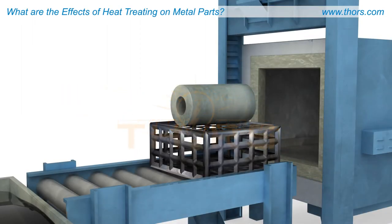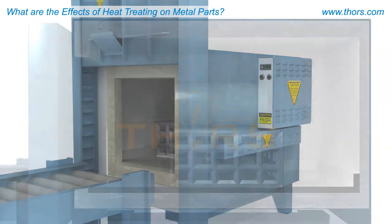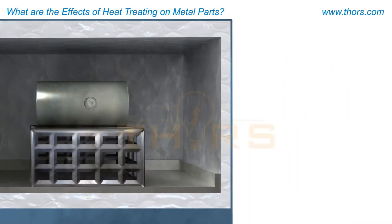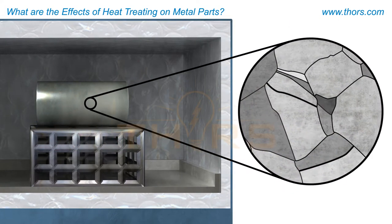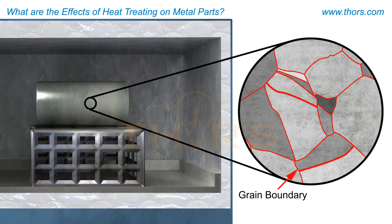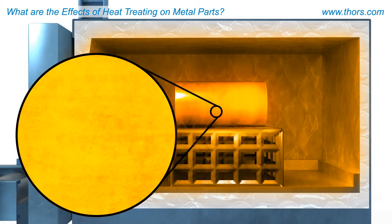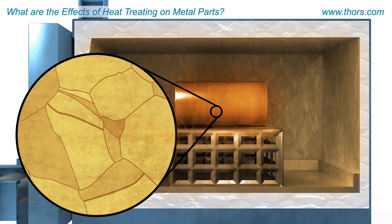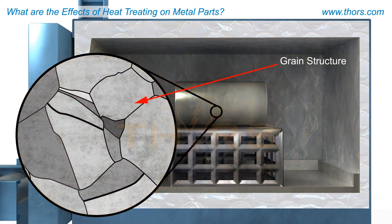To understand how heat treating improves the properties of metal parts and products, it is necessary to observe metal at microscopic levels. Metals are composed of distinct overlapping grains of varying sizes. The line or plane of intersection is referred to as the grain boundary. When metals solidify from a molten state, the grains or crystals emerge from the liquid and fuse together in specific patterns to form the grain structure, also referred to as crystal structure or microstructure.